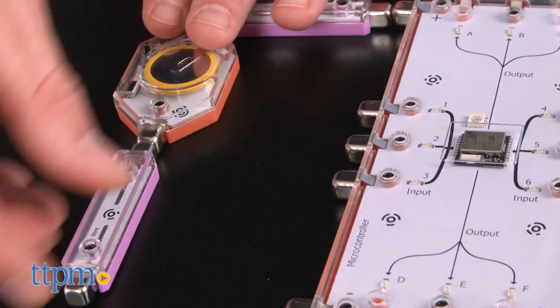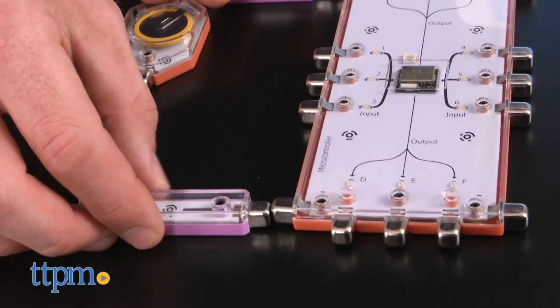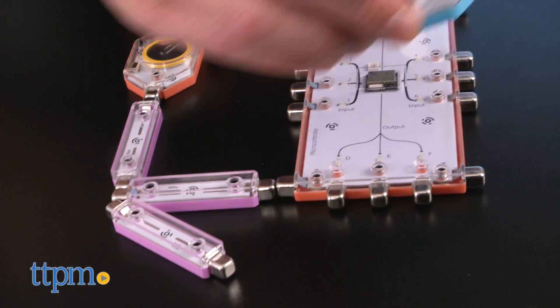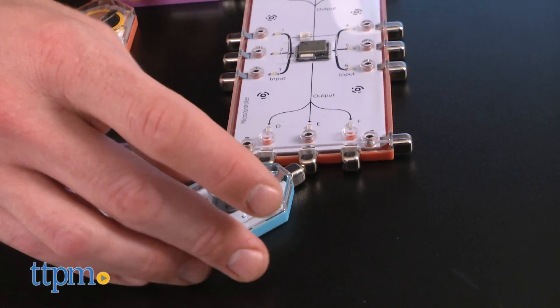First, download the free Light Up Learning app from the Apple App Store and get started. All of your inventions will use two pieces, the battery unit, which is USB rechargeable, and the microcontroller, which is the motherboard of the whole operation.